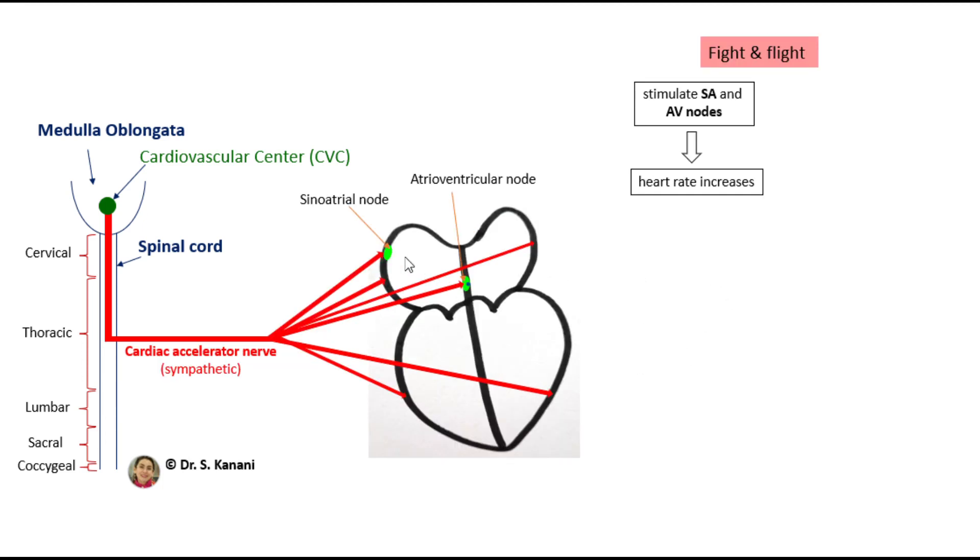Cardiac accelerator nerves stimulate cells that we have in the SA and AV nodes. As a result, the number of heartbeats per minute, that would be heart rate, would increase.